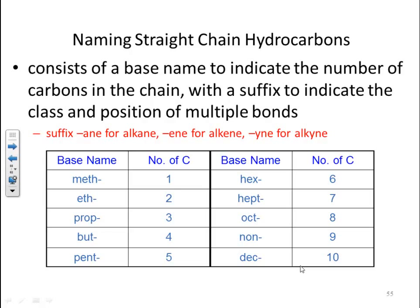Then you have your base name for the number of carbons in the chain. If you have one carbon, it's meth, 2, eth, 3, prop, 4, but, 5, penta, and so on and so forth.